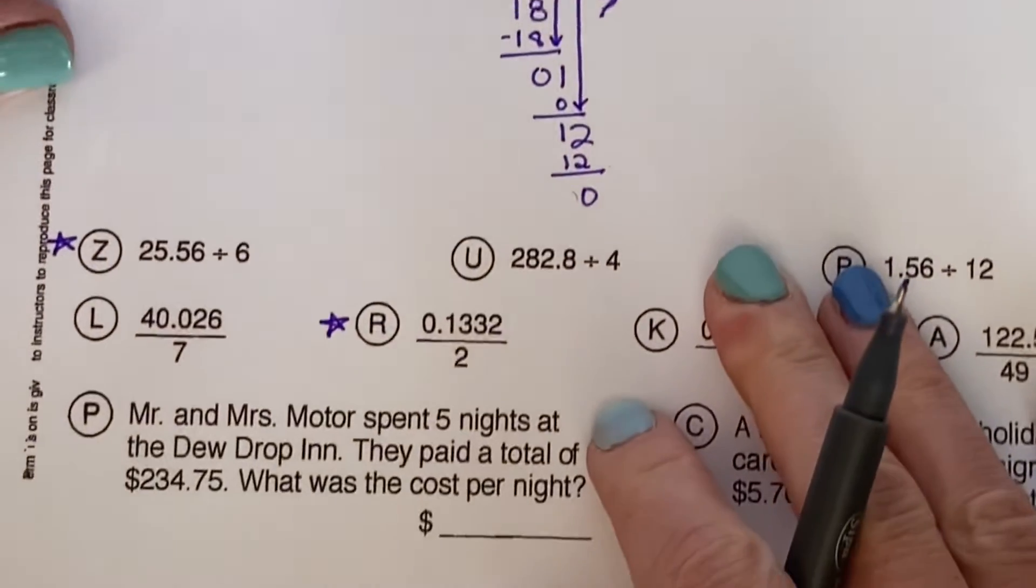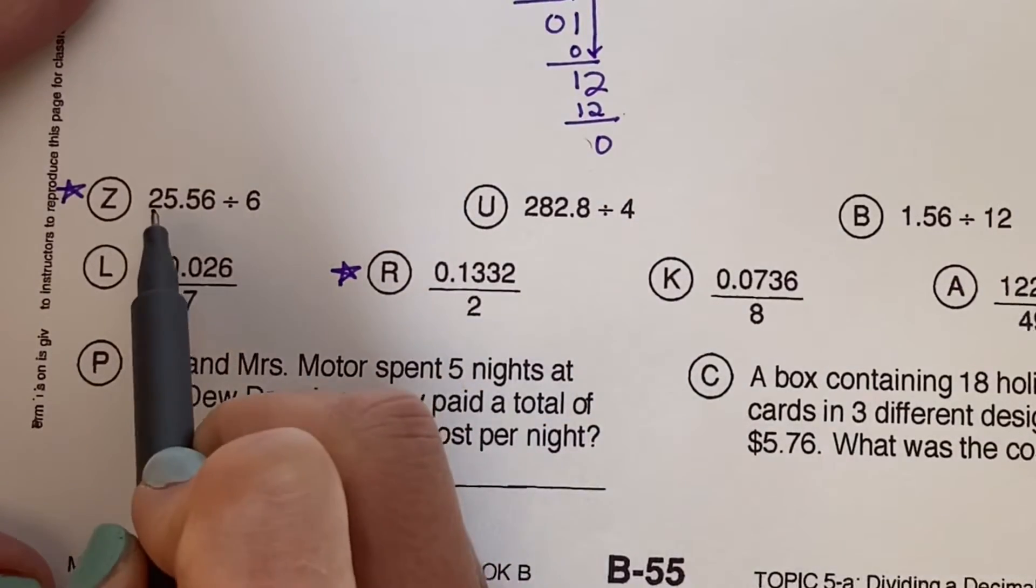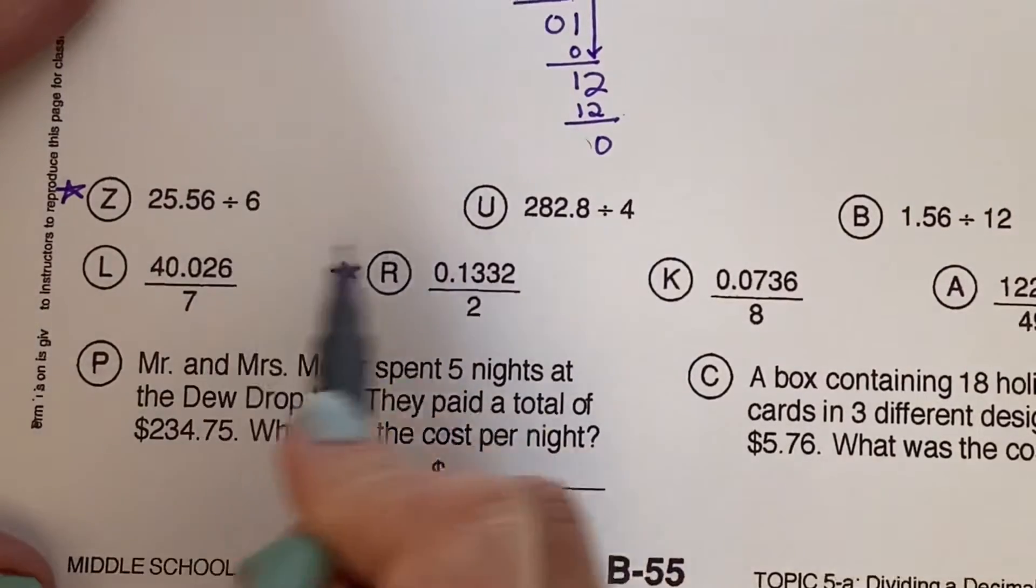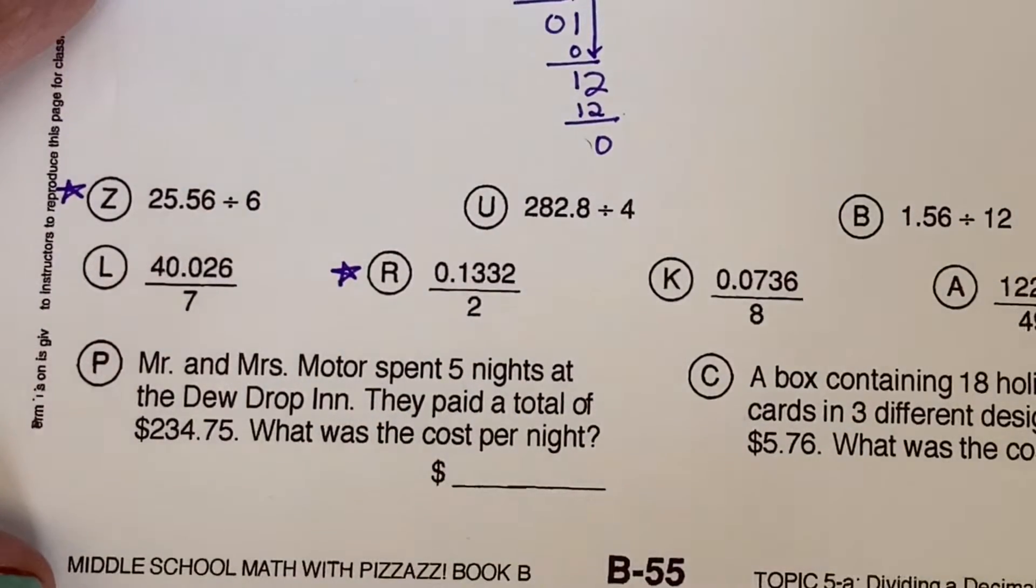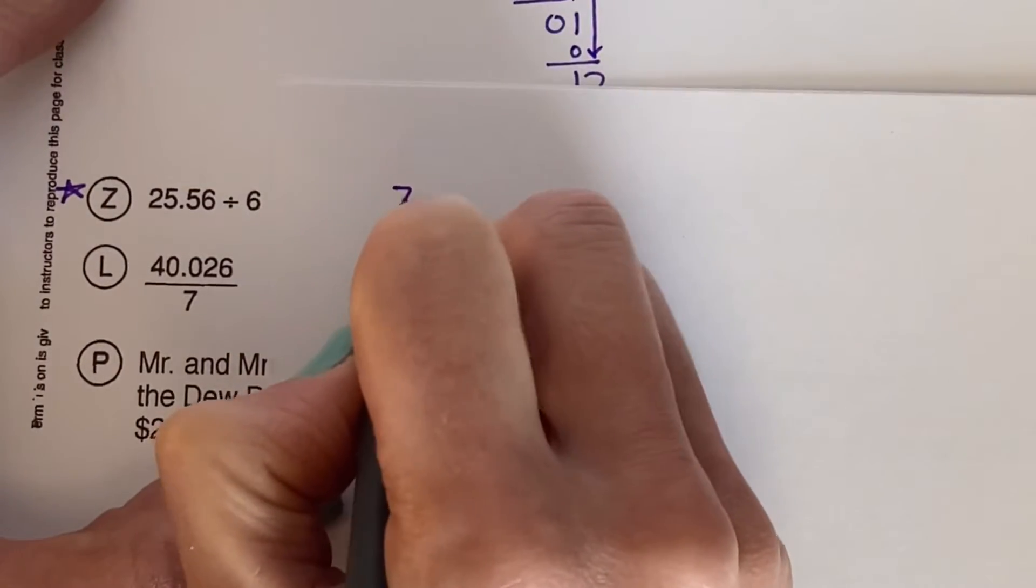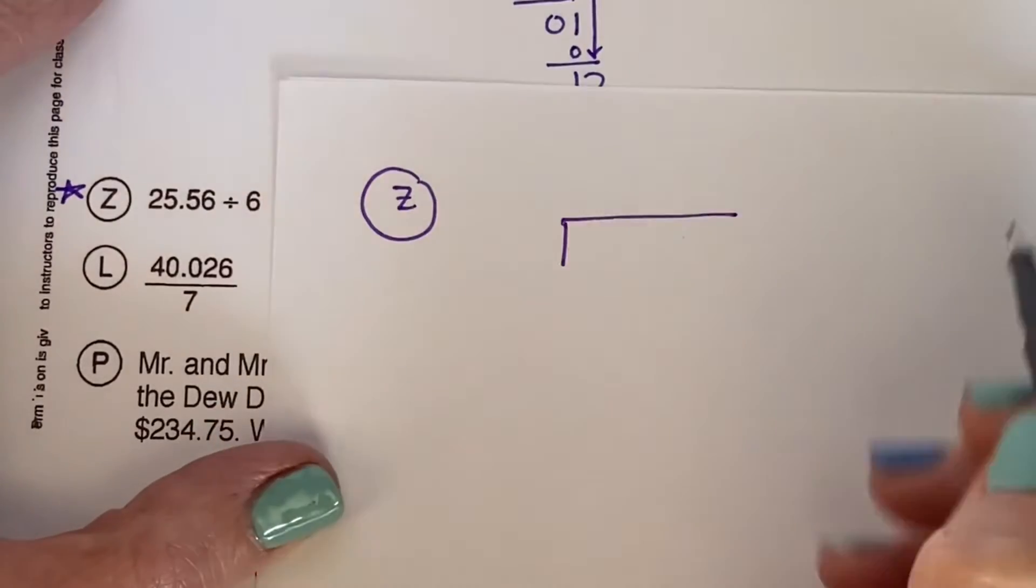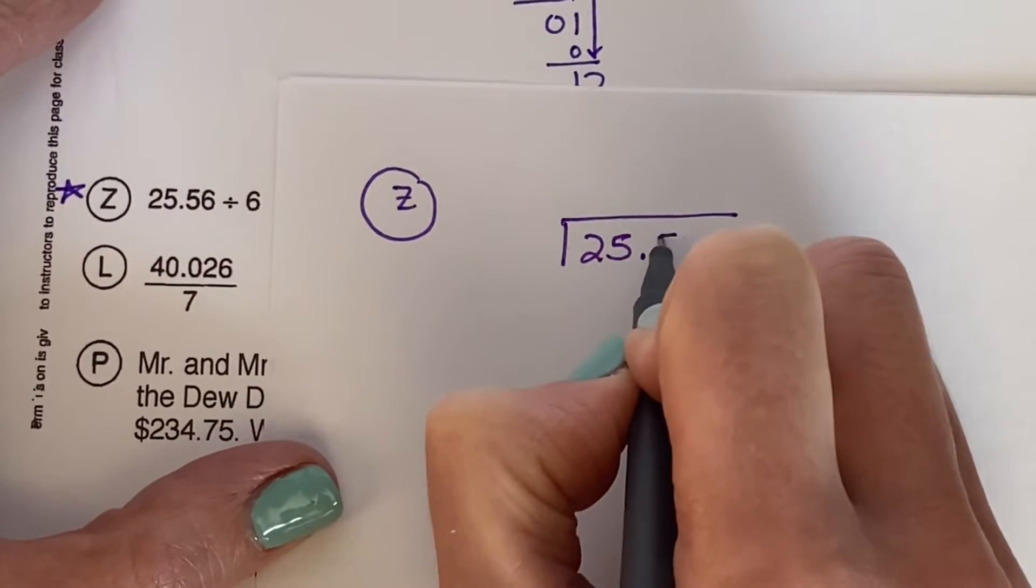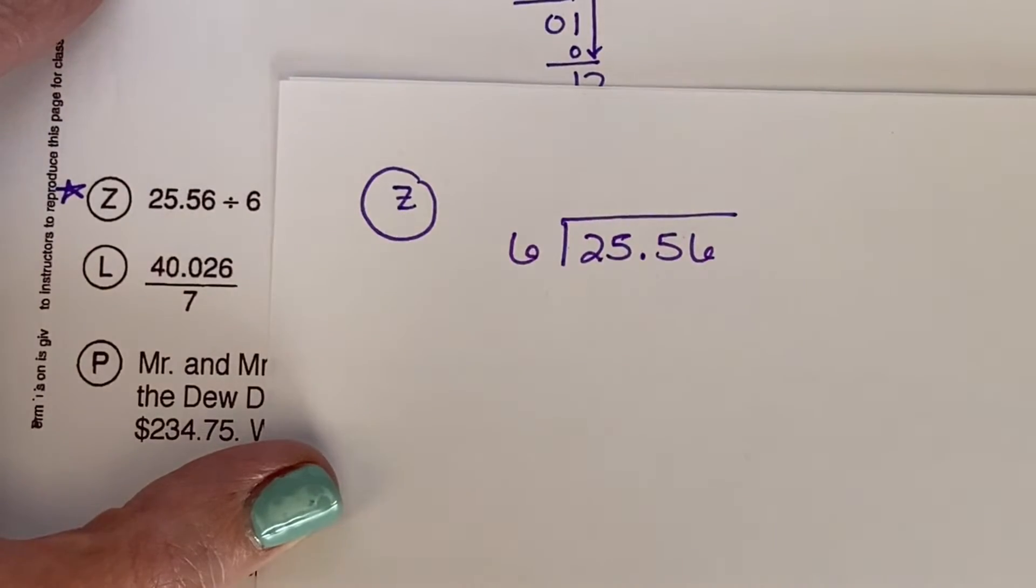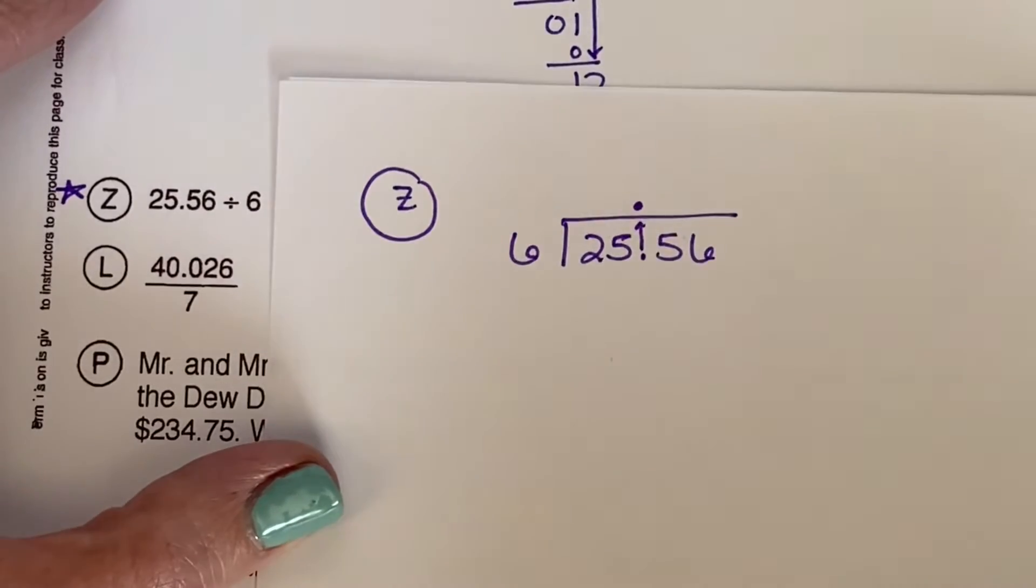Let's go down and do these couple problems down here. Let's do problem Z. 25.56 divided by 6. Ooh, I don't have a lot of room here, so I am going to rewrite that problem on a separate piece of paper so that I do not get confused. So I'm going to label it. Problem Z, 25.56 divided by 6. Okay, here we go. We rewrote it. Let's bring your decimal point straight up.